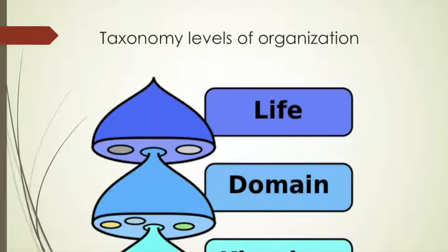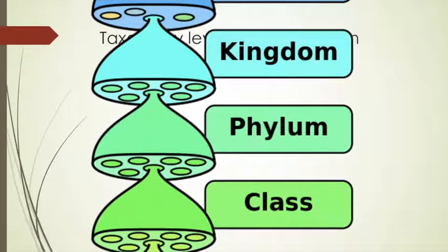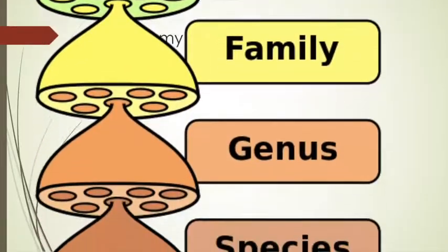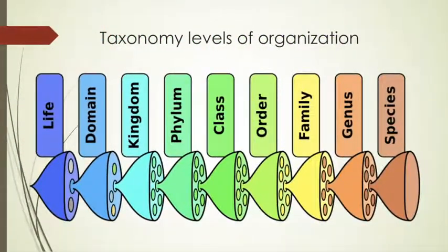The taxonomy levels of organization are a type of ladder that organizes organisms depending on different characteristics. As we move down on this ladder, the characteristics become more specific, and that helps us organize, classify, and give names to the organisms of Earth. It begins with everything that is alive, moving up to a domain, then to the kingdoms we just discussed, then phylum, class, order, family, genus, and finally a species. Here we can see them all together, and we use this to organize, classify, and name every organism on Earth.